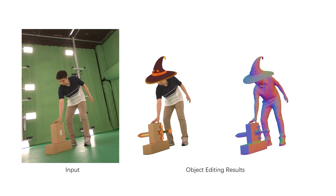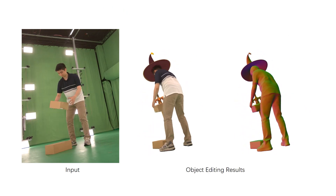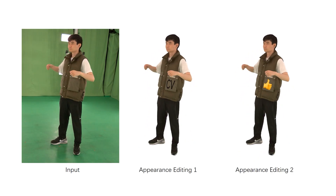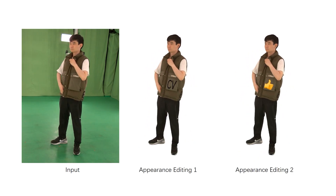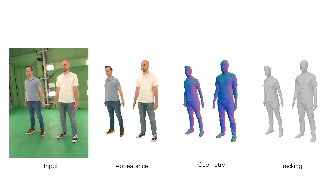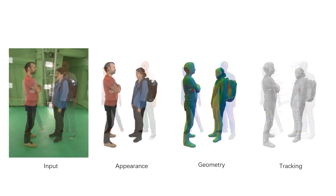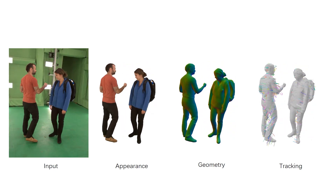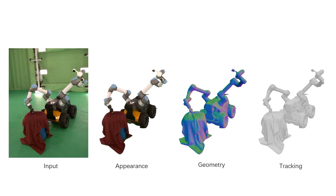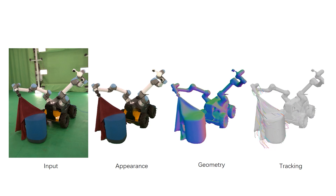Building on the tracking capability, G-star enables many applications. We can insert virtual objects to move with tracked surfaces. Texture changes made to a single frame automatically propagate throughout the sequence. G-star doesn't require a template and can handle diverse scenarios, including multiple people, human-object interactions, and dynamic scenes beyond human performances, like robots manipulating objects.